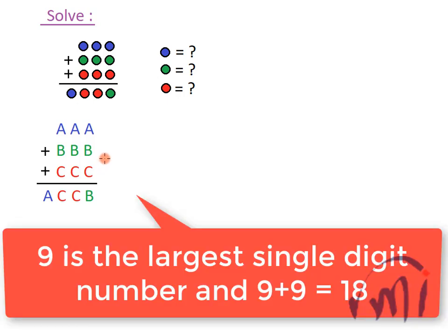So it cannot be 20 because 9 multiplied by 2 is 18 which is less than 20. That means A plus C is equal to 10.